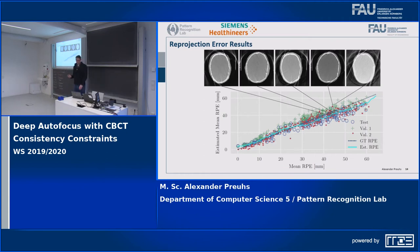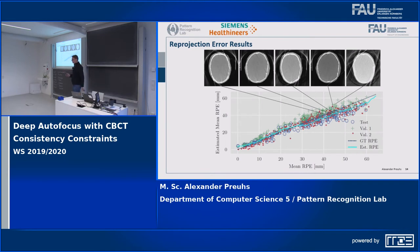More importantly, we need a good trend rather than exact prediction. In the course of optimization, we need a decreasing predicted reprojection error so that a better geometry is assigned a lower predicted value.